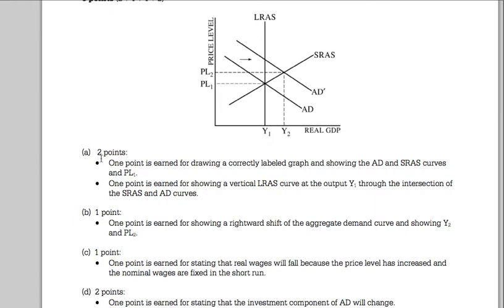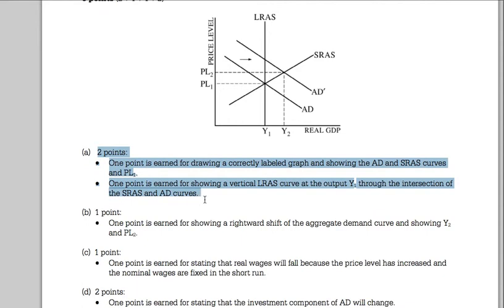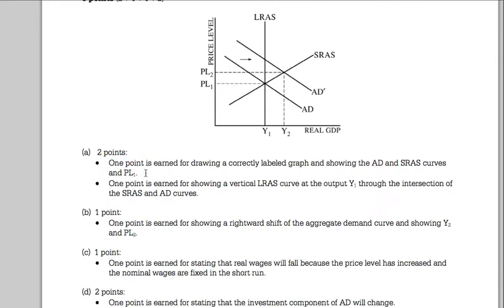So if you'll notice in the rubric, you earn two points for that. That is one point for the correct graph with PL1, and then another point for showing the vertical long run aggregate supply is in the same place as these other two right here. So that's two points.